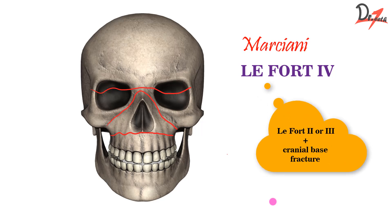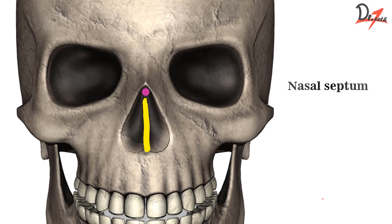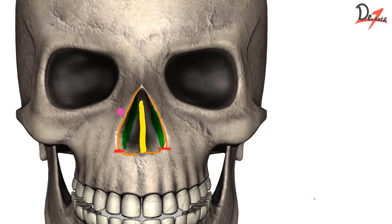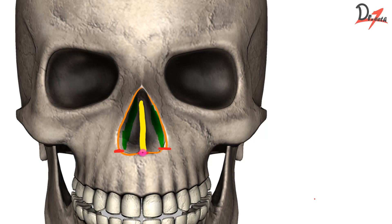Right now we are going to focus on the LeFort 1 fracture in detail. This is the nasal septum, and this opening is the anterior nasal aperture, with this being the lateral wall of the nose. If we have a horizontal impact on the maxilla — a horizontal force just above the apices of the maxillary teeth — the lateral margin of the anterior nasal aperture will be involved in the fracture. We also have the maxillary sinus, so the lateral wall of the maxillary sinus below the zygomatic buttress will be involved, and the lower one-third of the nasal septum will also be involved.